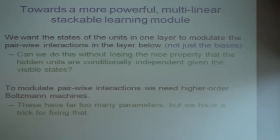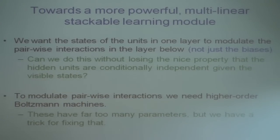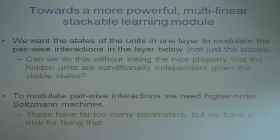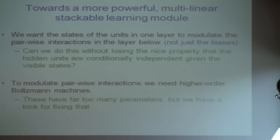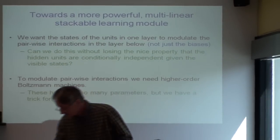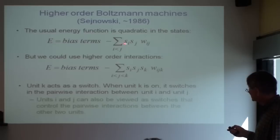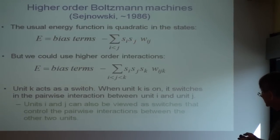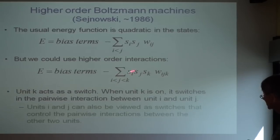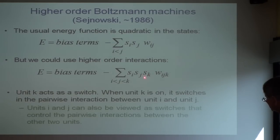We're going to aim to get units in one layer to say how units in the layer below should laterally interact when you're generating. It turns out you don't need to worry about those lateral interactions when you're recognizing; when you're generating, you do. To do that, we're going to need things called third-order Boltzmann machines, which have three-way interactions. Terry Sejnowski pointed out a long time ago that we can write down an energy function where three things interact and have a three-way weight. The state of K is acting like a switch: when K is on, you effectively have a weight between I and J; when K is off, that weight disappears. So using an energy function like this, we can allow one thing to specify how two other things should interact.